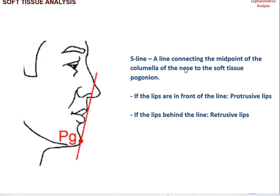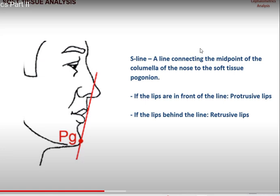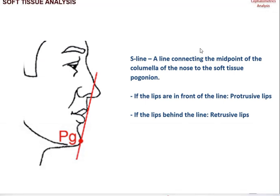For the soft tissue analysis, there is a line connecting the midpoint of the columella of the nose with the soft tissue pogonion — this is the E-line. If the lips are in front of this line, they are considered protrusive. If the lips fall behind the line, they are considered retrusive in nature.